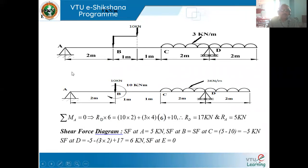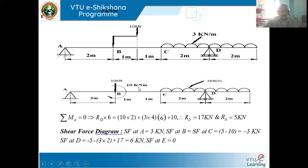Taking moments about point A, the sum of all moments about point A is equated to zero. RD into 6 — since that is a counter-clockwise moment — must equal the sum of clockwise moments. Here the equivalent diagram has been drawn for the given beam, where the point load of 10 kilonewton and the clockwise couple of 10 kilonewton meter are both considered.